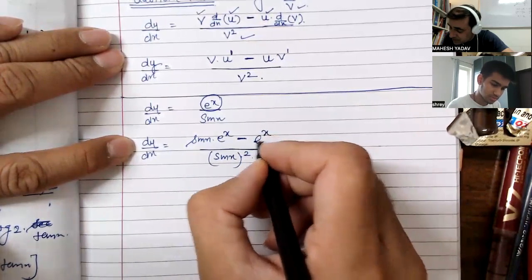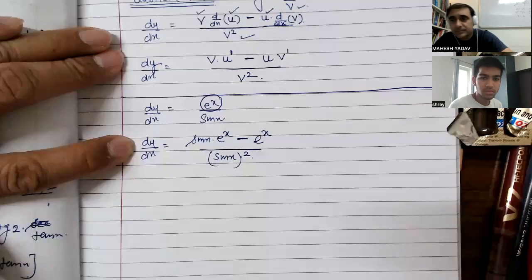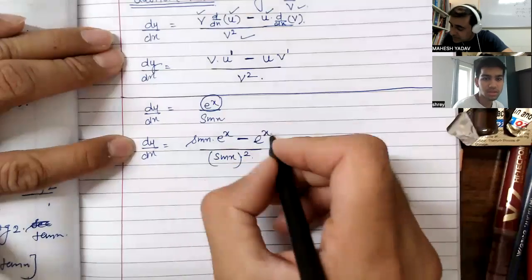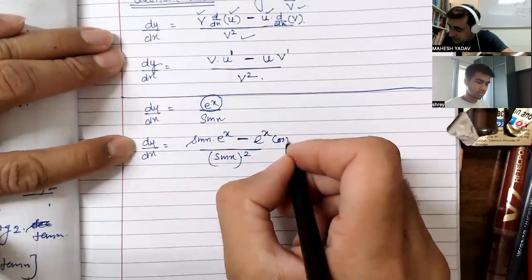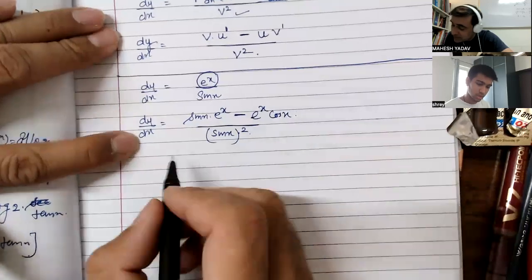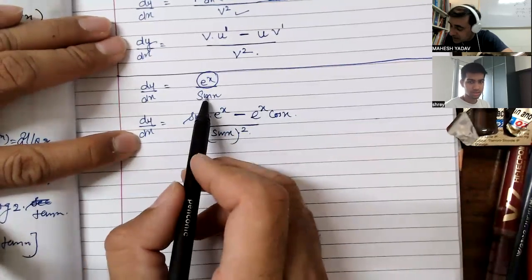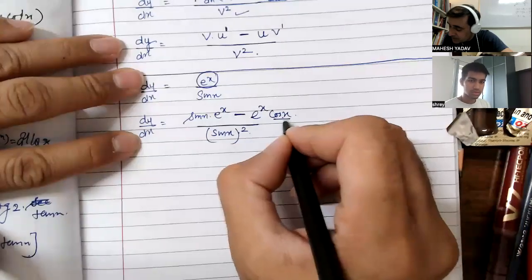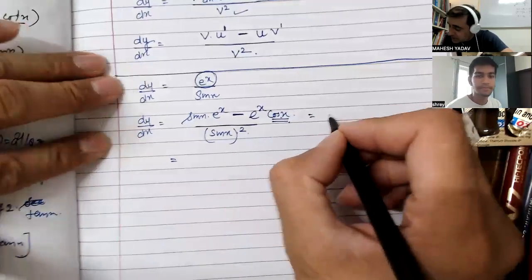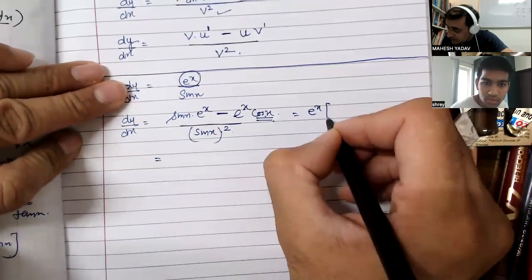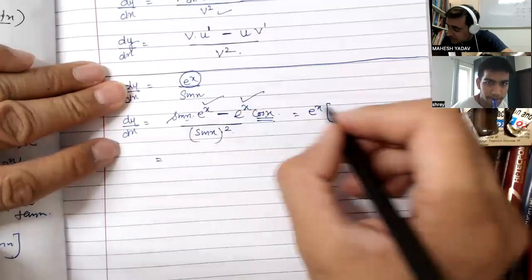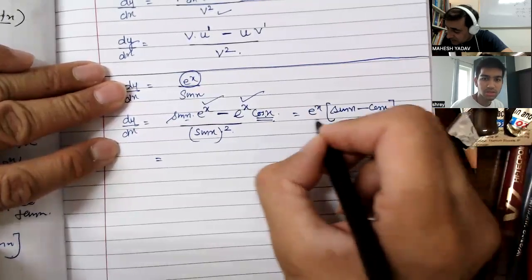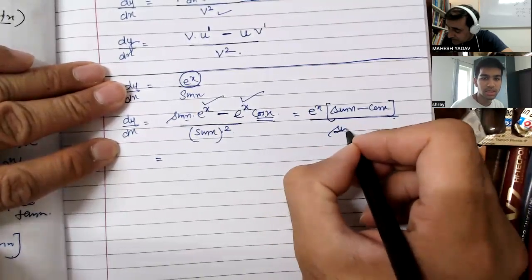e^x as it is, minus the derivative of sin x which is cos x. So we get: sin x · e^x minus e^x · cos x, all upon sin x squared.